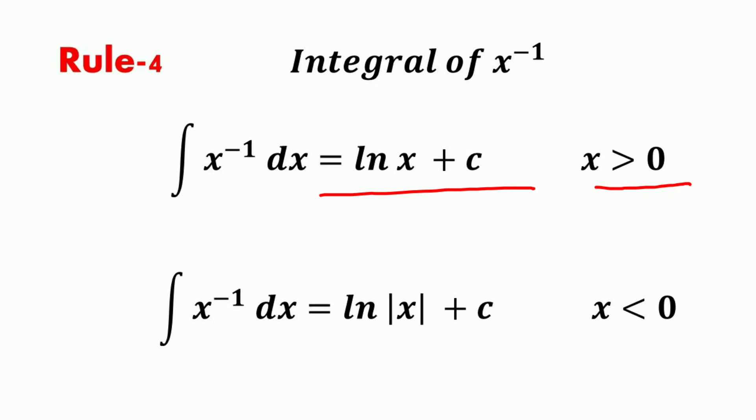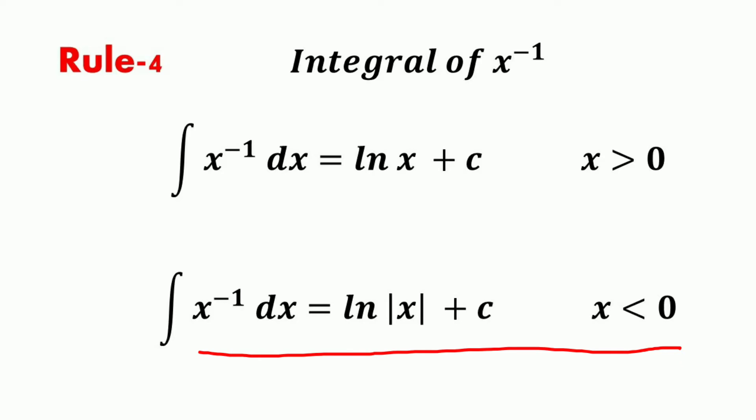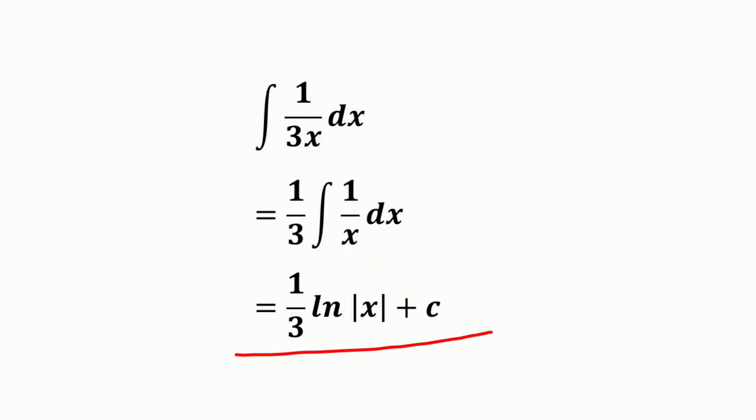However, the domain of the original function whose anti-derivative you calculated might include negative values as well. In that case, if you just take the variable you will have a problem, but if you take the absolute value it will satisfy the criteria. Therefore, for negative x — that is, if x is less than 0 — the integral of x to the negative 1 power is ln|x| plus c. For example, the integral of (1/(3x)) dx equals (1/3) times the integral of (1/x) dx, which equals (1/3) ln|x| plus c.